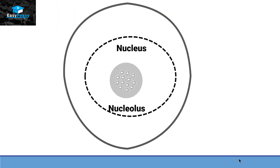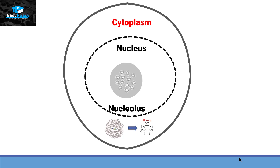Now if we talk about a cell — whether it is present in the liver, in the heart, in the brain, wherever it is — the conversion of glycogen into glucose usually occurs inside the cytoplasm of the cell. Before we start discussing the process of glycogenolysis, we should understand the structure of glycogen.